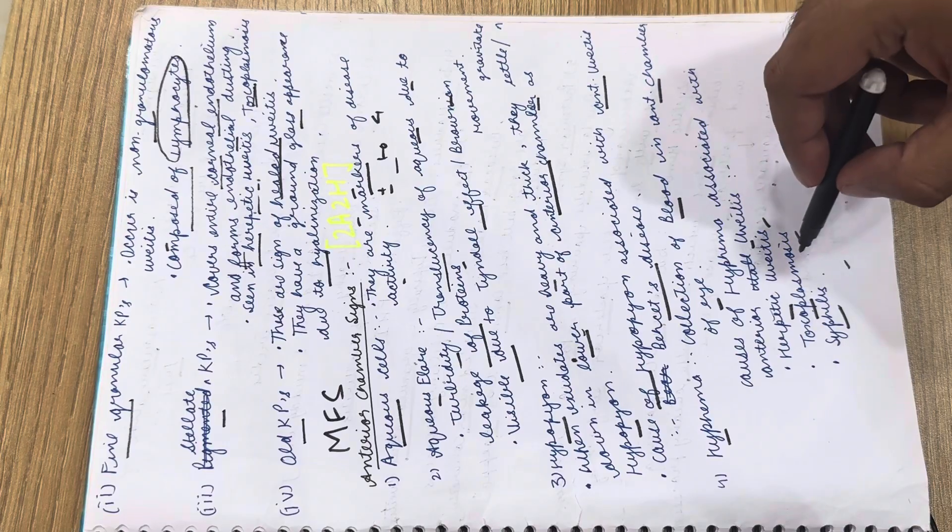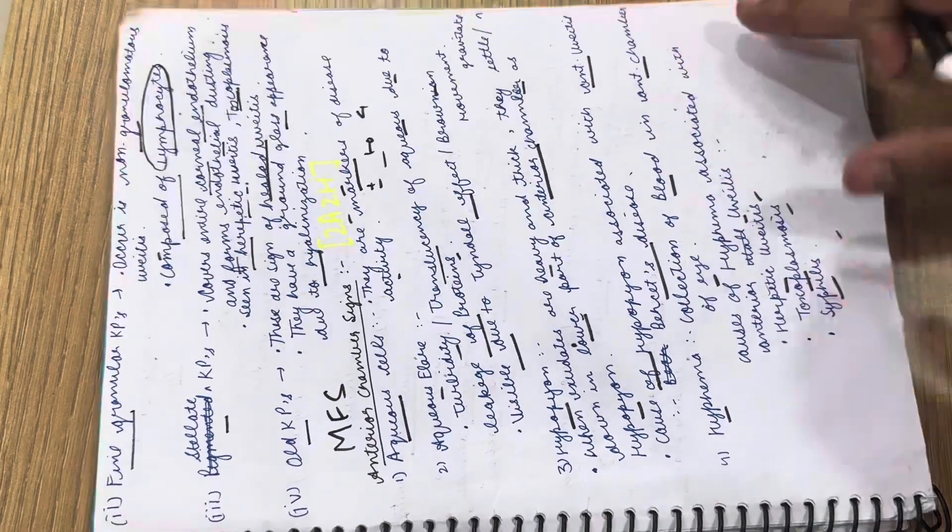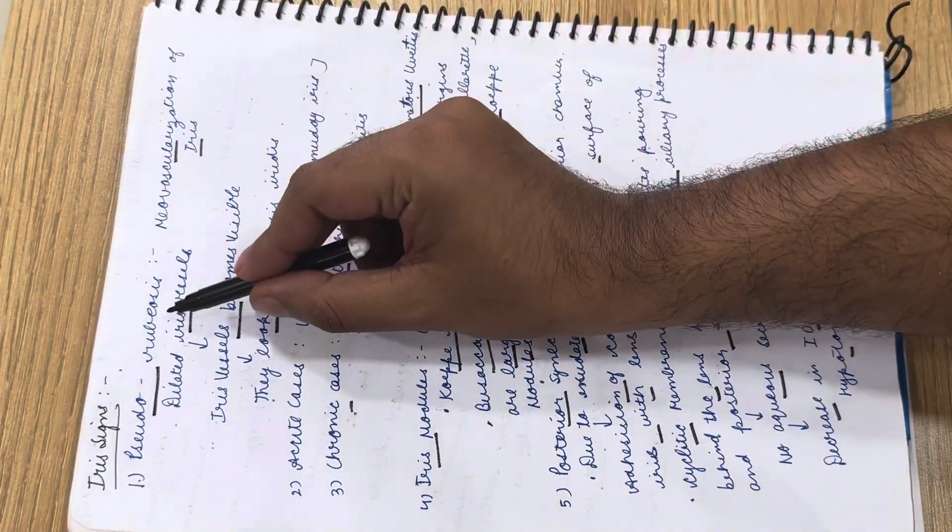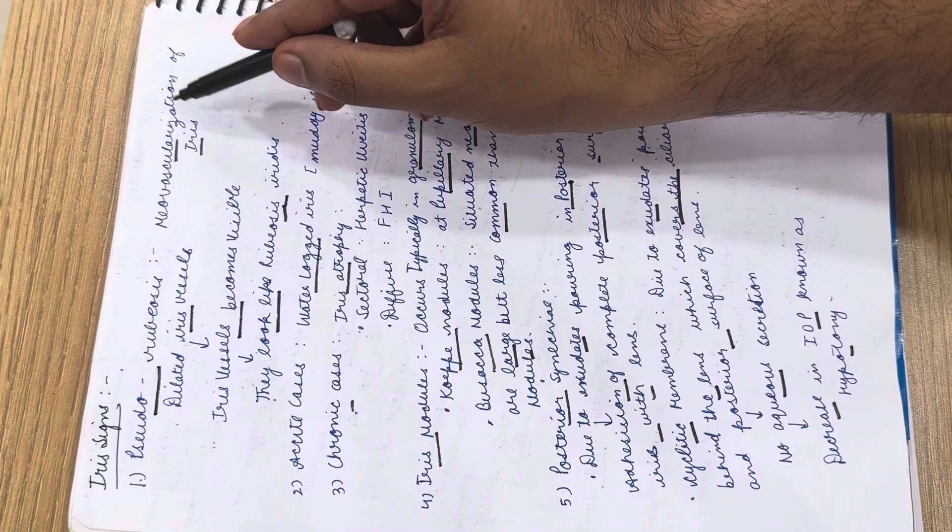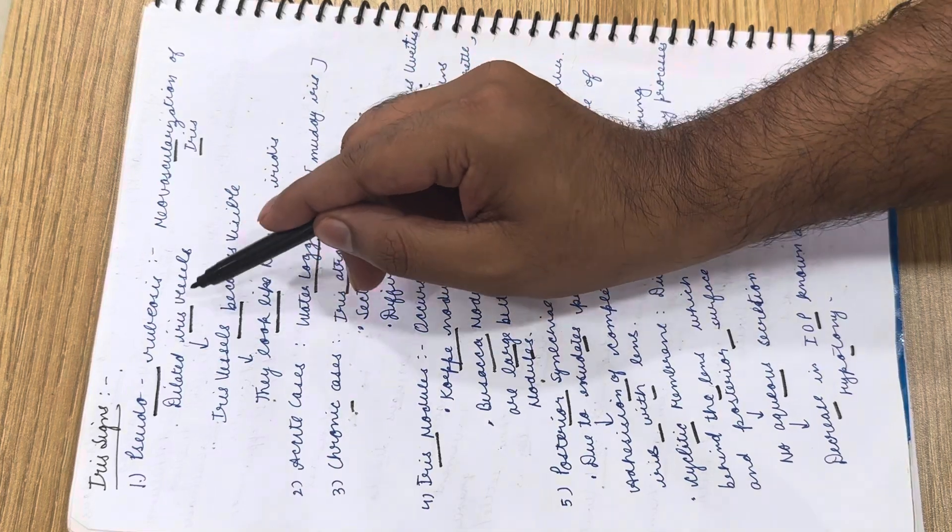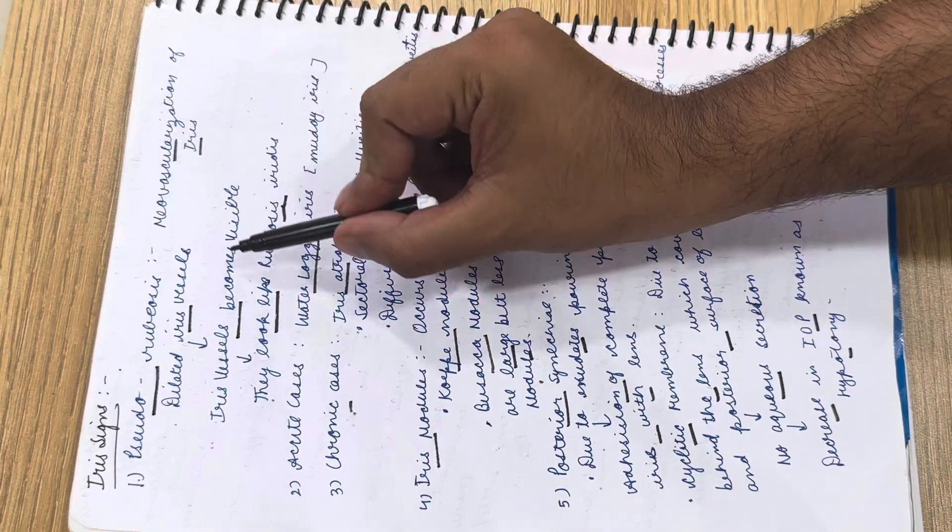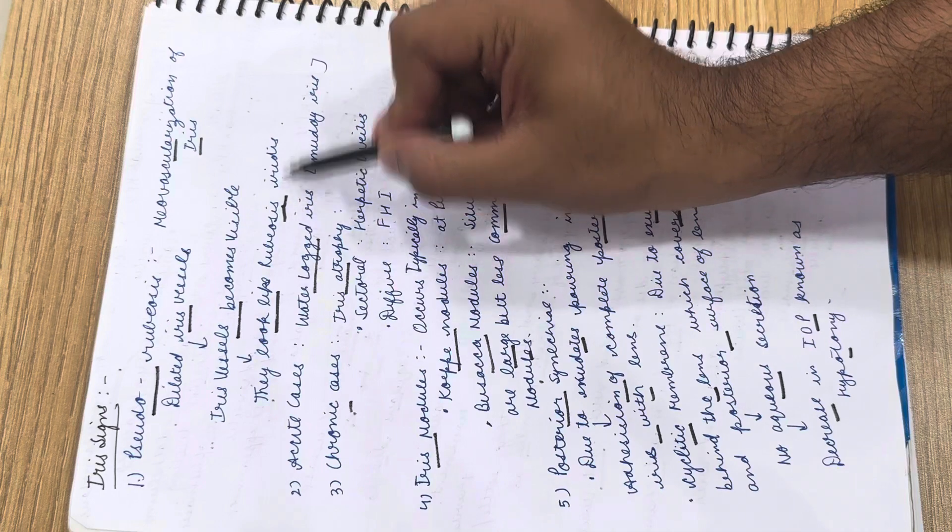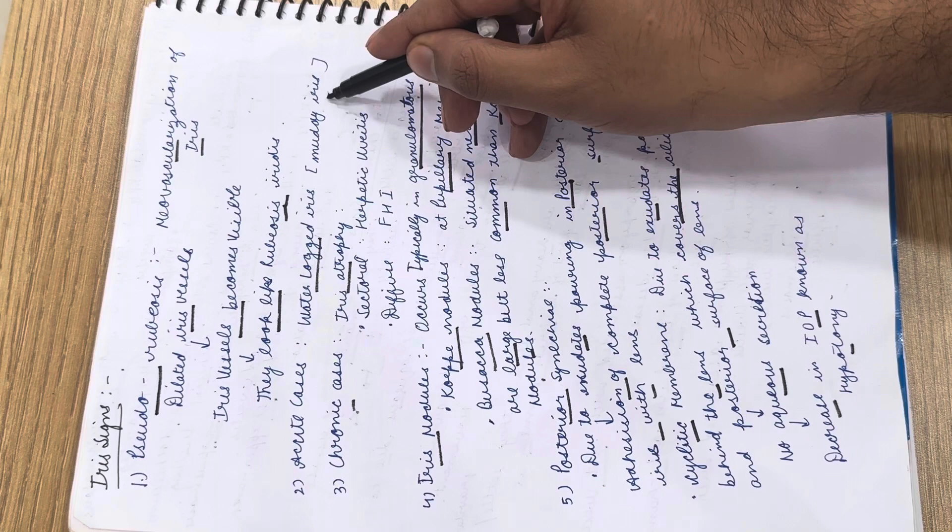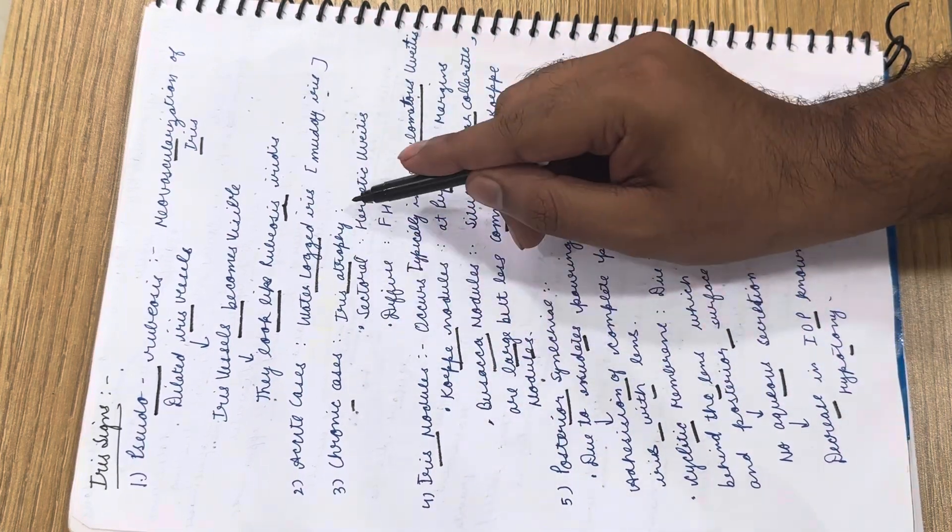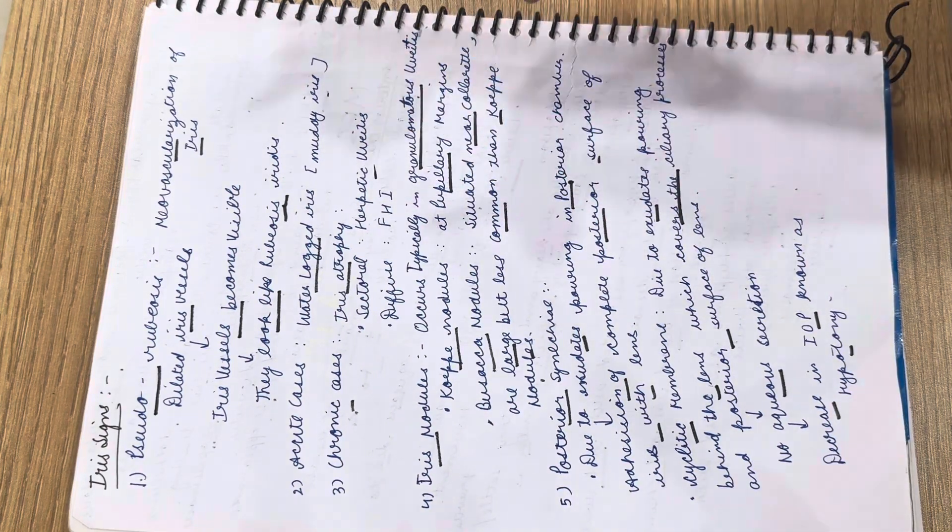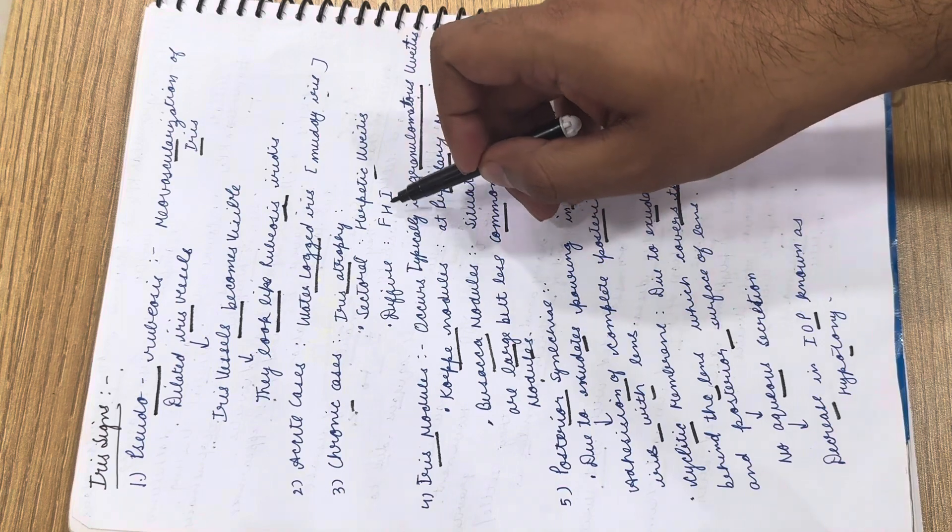The iris signs include pseudorubeosis, also known as neovascularization of iris. Due to dilated iris vessels, they are quite visible and look like rubeosis iridis. In acute cases you see waterlogged or muddy iris. In chronic cases we see iris atrophy. If it's sectoral iris atrophy, it's herpetic uveitis. If it's diffuse iris atrophy, it is FHI.